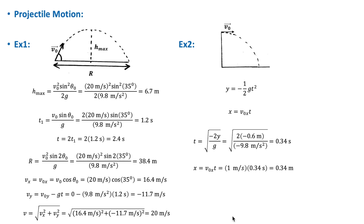For the y component of velocity just before hitting the ground: taking the highest point as the reference where v₀ᵧ = 0, and using the time interval t₁, we get v_y = −11.7 m/s. It is negative because the motion is in the negative y direction at that point.